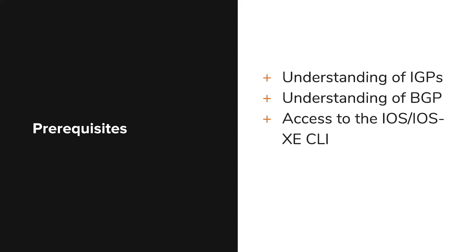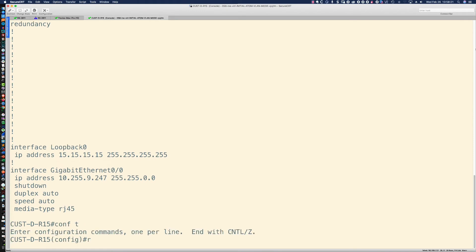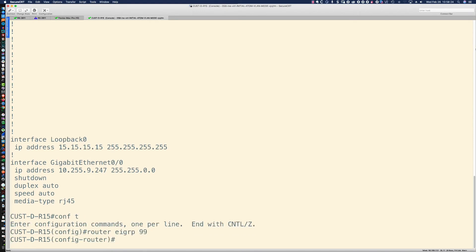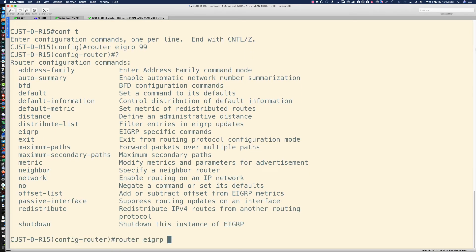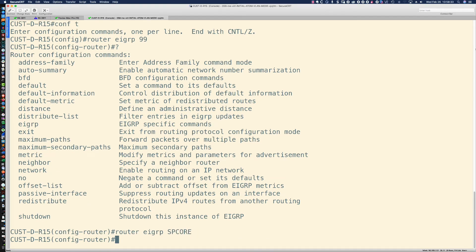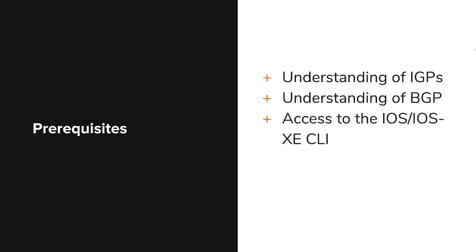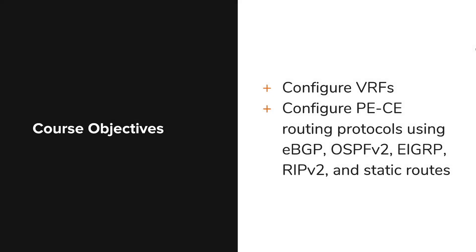Access to the IOS or IOS XE CLI is going to be critical because it allows you to reinforce the concepts that you're learning about on the command line interface. There are also a number of objectives related to this course. First and foremost, we're going to learn how to configure VRFs and the semantics around virtual routing and forwarding, building on VRF lite knowledge from the first course of this learning path. We're going to be configuring provider edge to customer edge — PE to CE — routing protocols: EBGP, OSPFv2, EIGRP, RIPv2, and static routes.